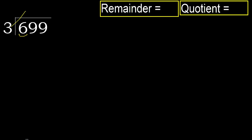Multiply by which number is nearest to 6, but not greater? 3 multiplied by 3 is 9 — 9 is greater. Multiply by 2: 6 is not greater. Subtract. 6 minus 6 equals 0.